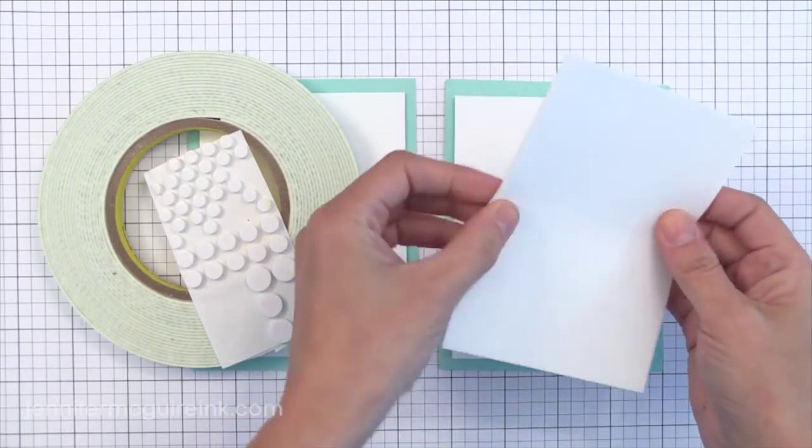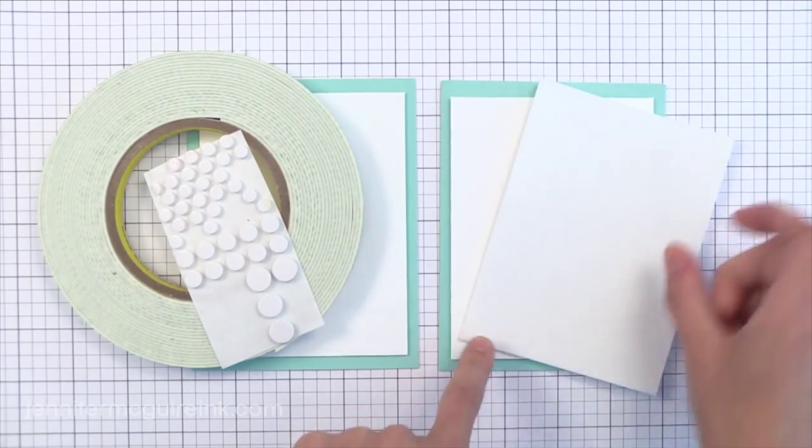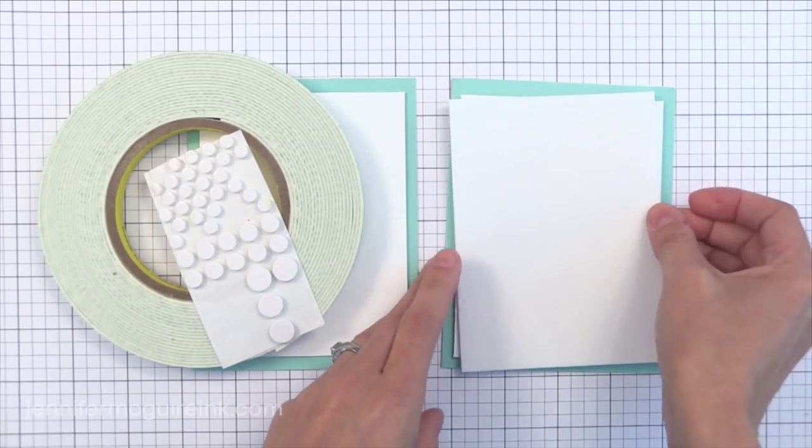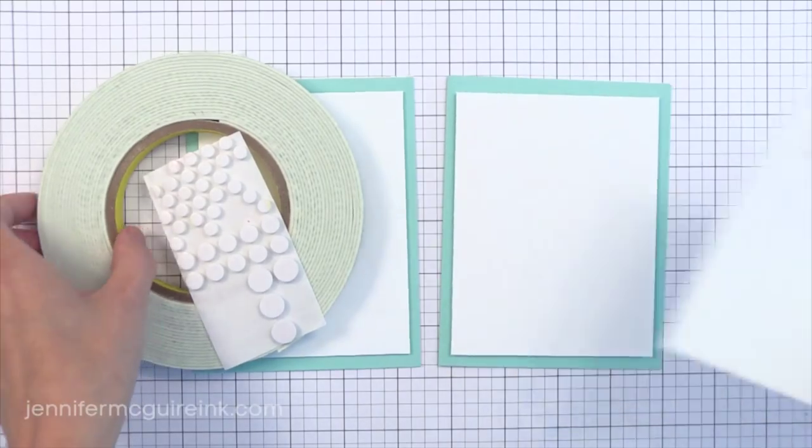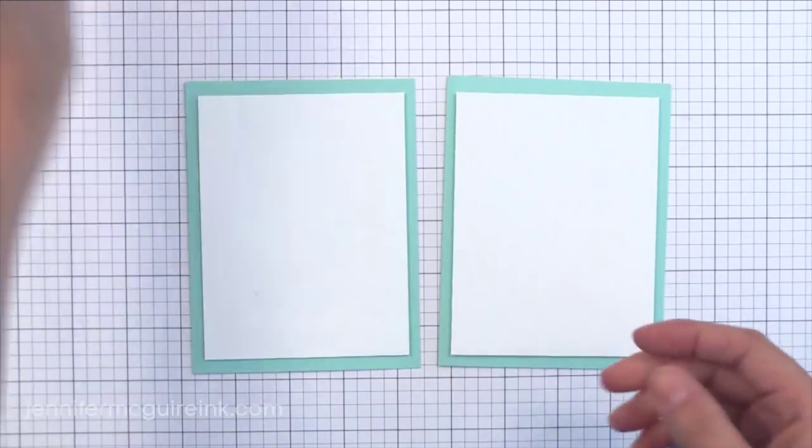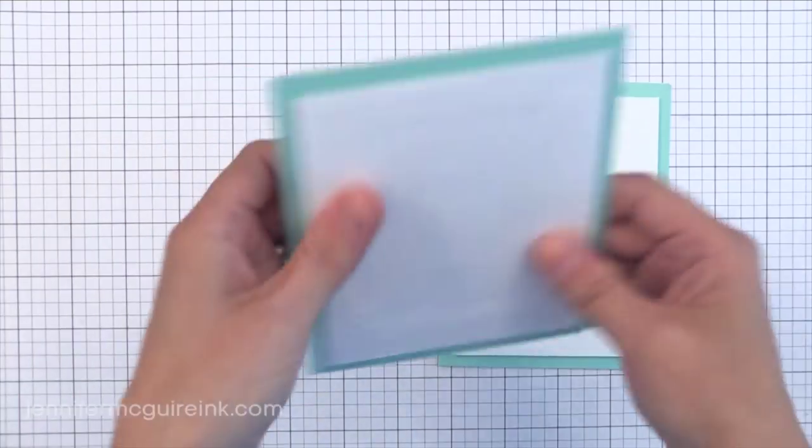The card on the right, same paper, same note card, but I used a piece of craft foam that is cut slightly smaller than the white panel and glued behind there. So this is fun foam, craft foam. I think it has two millimeter thickness to it. Very inexpensive.